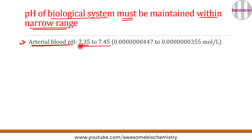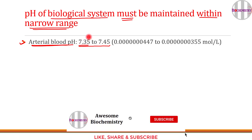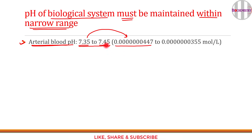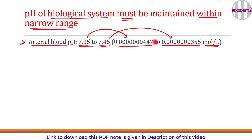Converting the pH values of 7.35 and 7.45 into hydrogen ion concentrations in moles per liter shows that the corresponding values differ very little, confirming that arterial blood pH is indeed maintained within a very narrow range.